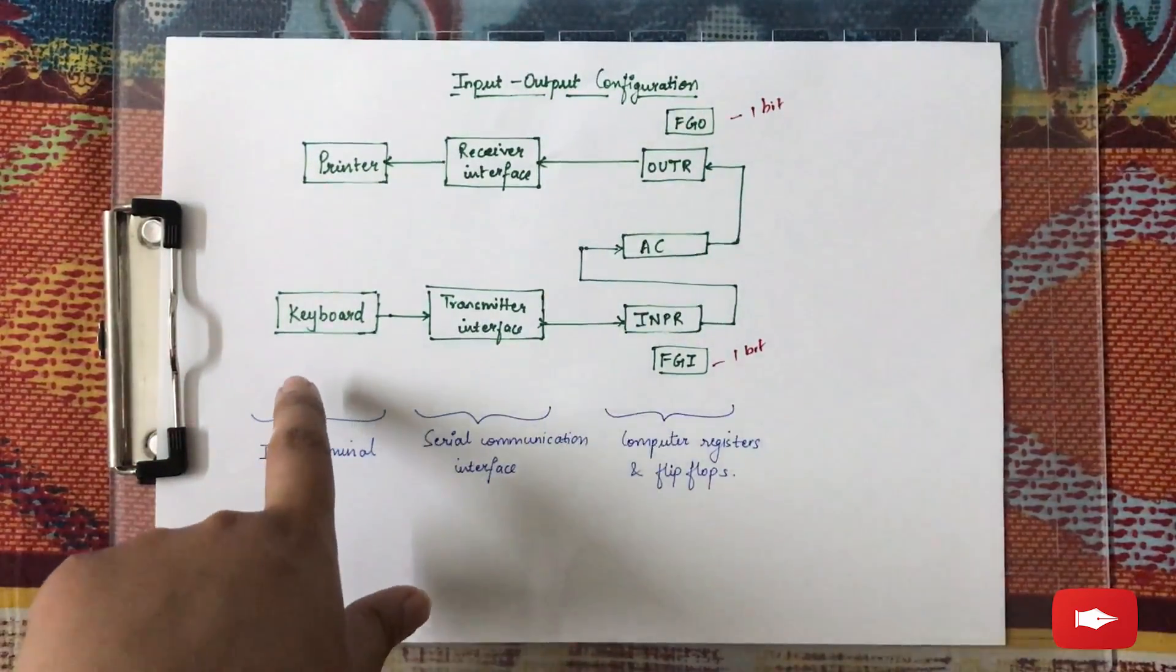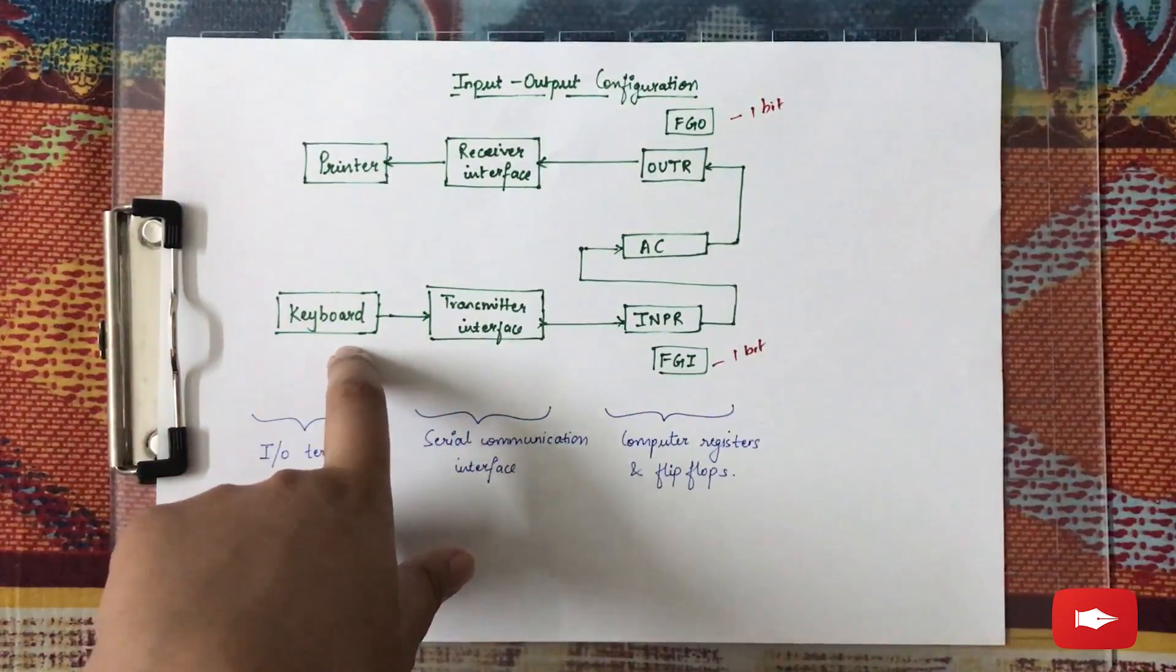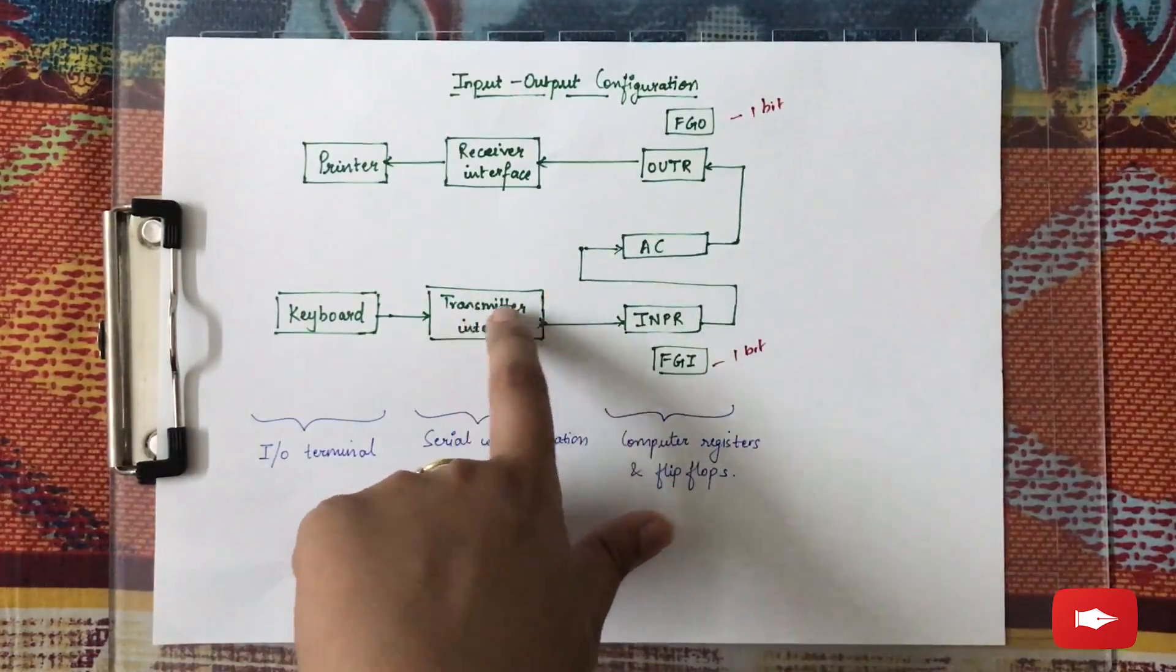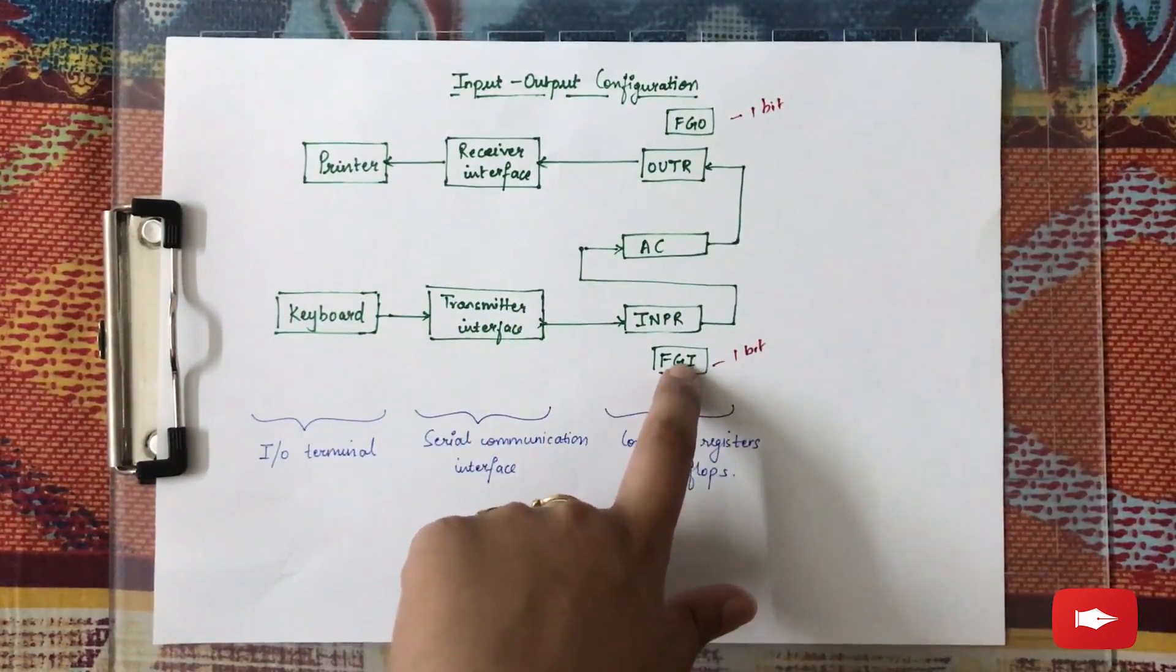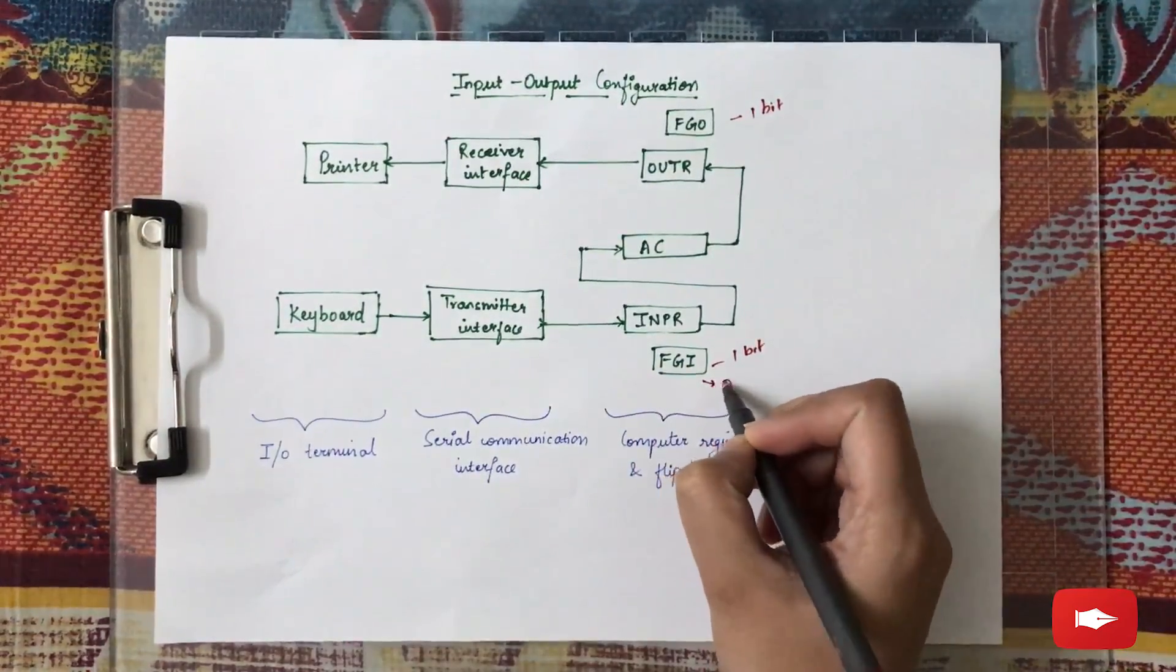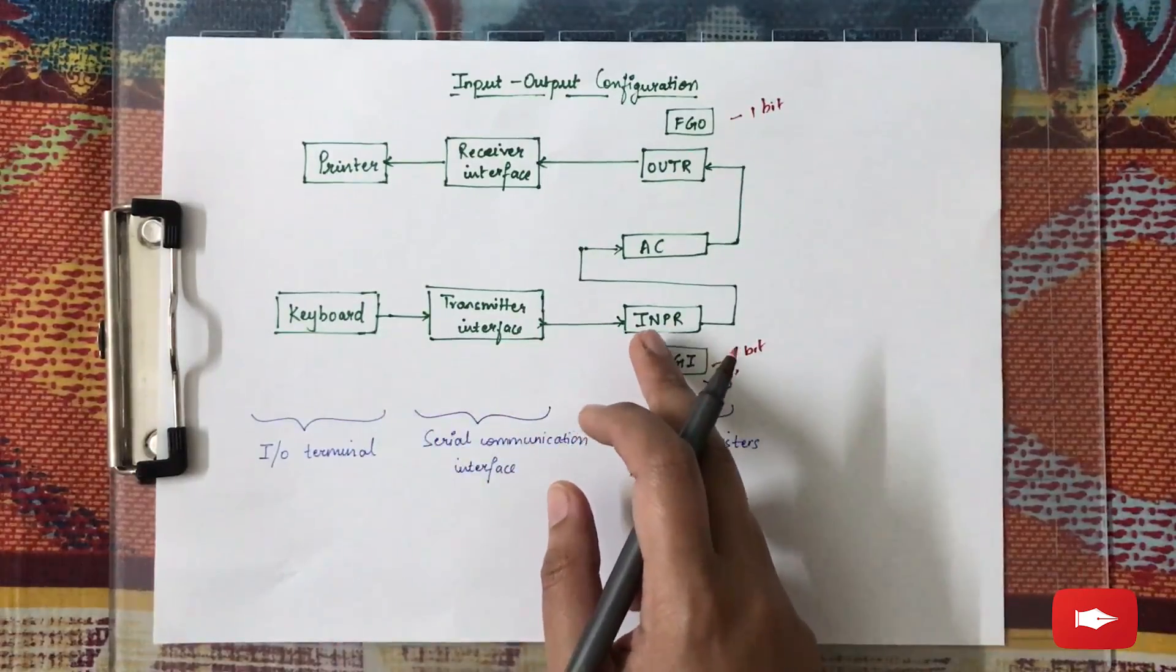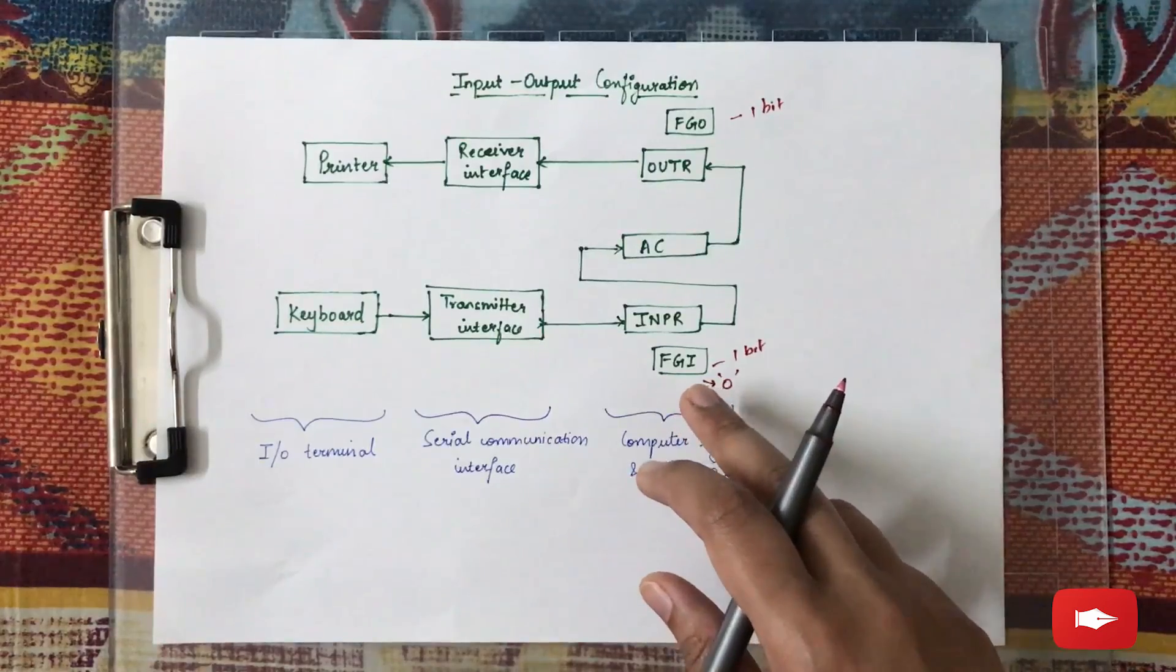What happens is, as soon as a key strike occurs in the keyboard, the information from there is transferred to the input register through the transmitter interface. Initially, the value of FGI, that is the input flag, is 0. As soon as the information transfers into the input register, this value is set to 1.